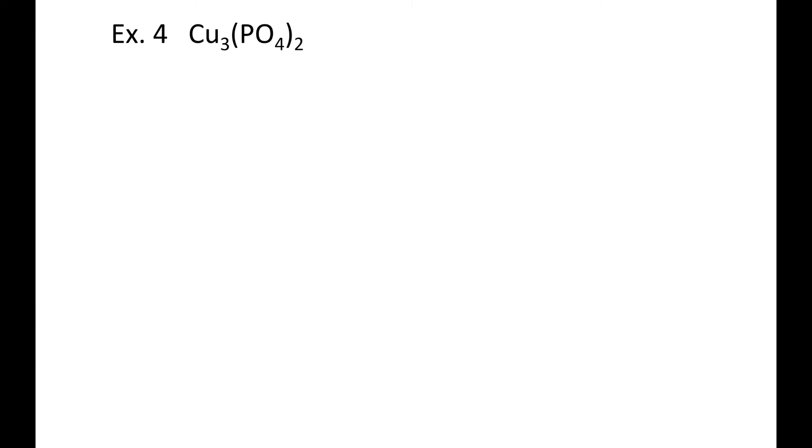Last but not least, our fourth example. This one's a little harder. We have parentheses, we have to distribute the two. So we know we have three CU's, because the three is next to the CU. But this two goes to the P, so that means we have two P's, and this two also goes to the O4. So we have eight O's all together.